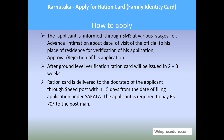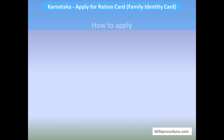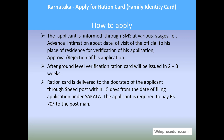The approval or rejection of the ration card will be intimated through SMS to the applicant. The applicant will also get the ration card at their doorstep through speed post. For the speed post, the applicant has to pay rupees 70 to the postman. Thus the online application process for getting a ration card will be completed. Hope this video helped you — don't forget to give us a like and subscribe to our channel for more such videos. Thanks once again for visiting WikiProcedure.com.